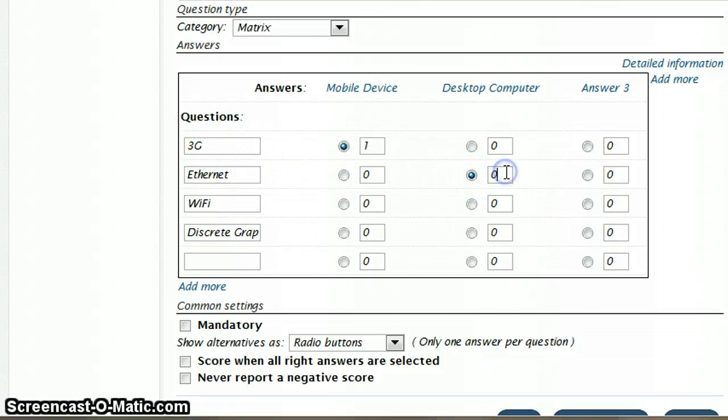Ethernet, most usually associated with desktops. Maybe I should have put gigabit ethernet or something. Wi-Fi, most associated with mobile, although desktops can have it too. And discrete graphics is associated with desktop computers here. So I'm going to select this one and put 1 in the answer there.